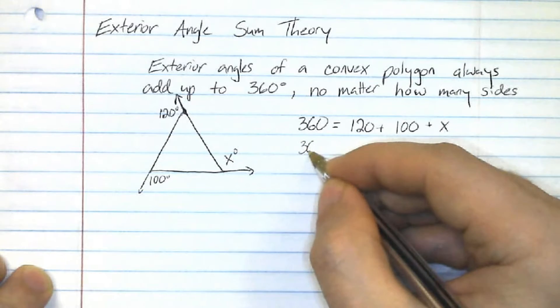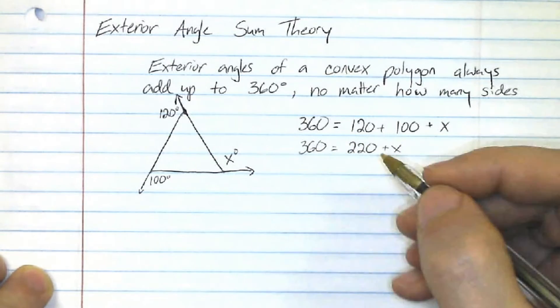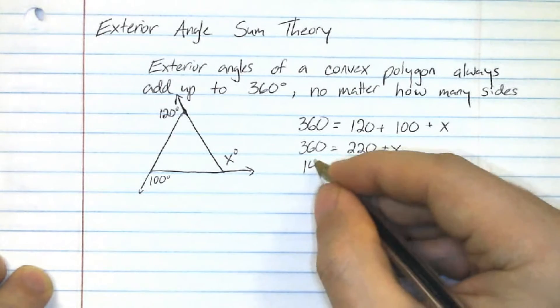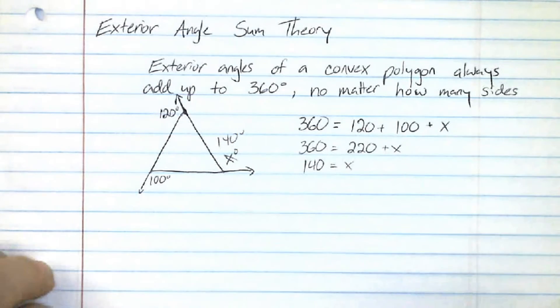120 and 100, that is going to make 220. Take away 220 on both sides, I end up with 140 equals X. So this is going to be 140 degrees.